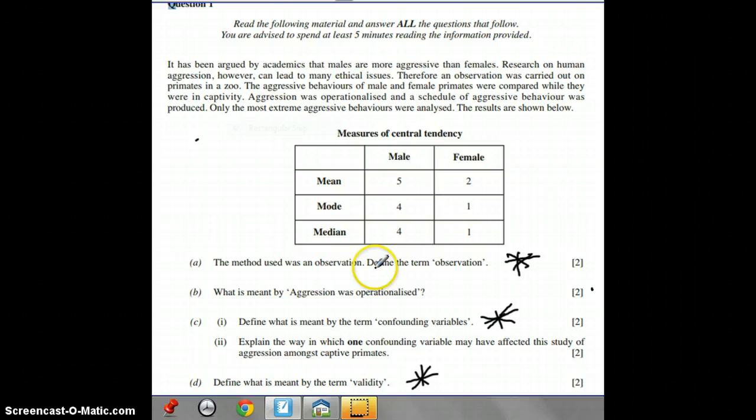The first question is: the method used was an observation, define the term observation. You don't have to refer at all to the scenario here. That's why I put a little black star against it. An observation takes place where the researcher is looking at participants producing the behavior they're interested in studying. You might want to talk about controlled observations in an artificial situation and naturalistic observation in the participants' own environment.